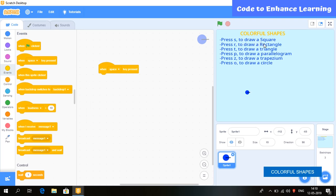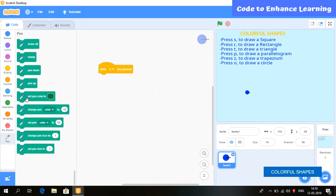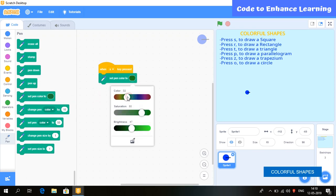Let's start with a square. We will choose S keyword so that whenever we press S, the code for square executed and produces a square in the output. So, to draw a square, we will need a pen.